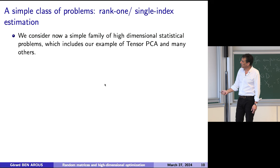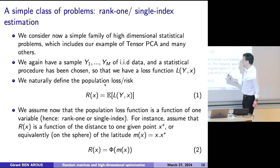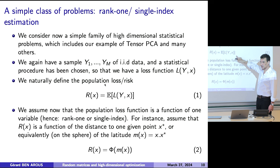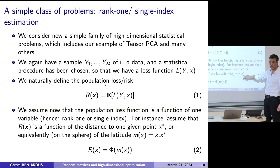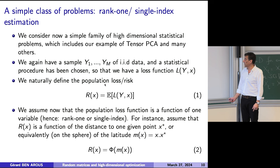Let's go back to what I was explaining yesterday. I gave you the single index type of model — so let's look at what it is. You have a sample and a loss function, or population loss, called phi. We assume that the population loss is in fact a function of a one-dimensional thing — that's single index. This one-dimensional thing would be the inner product of X with some given vector X*. That's what we had yesterday in tensor PCA — the population loss is a function of a one-dimensional object, the single index or rank-one problem.